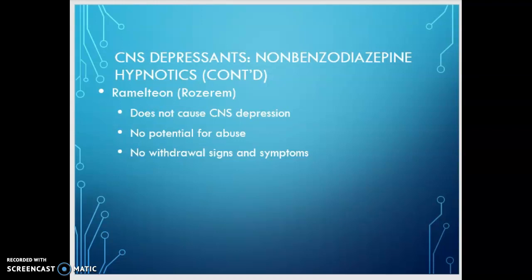One of the favorable ones is ramelteon, or Rozerem, because it doesn't cause CNS depression and has no potential for abuse and no withdrawal signs or symptoms. That's because it's a melatonin receptor agonist — it's believed to act by promoting the receptors to uptake endogenous melatonin, so it can be used long-term and it's not on the Beers list. We're going to have to go to a part two, so I'll see you in a few minutes.